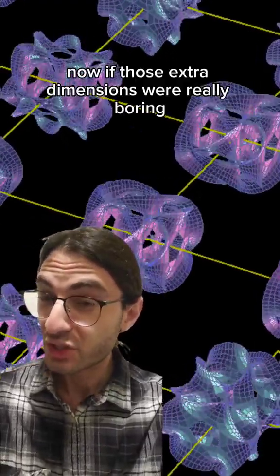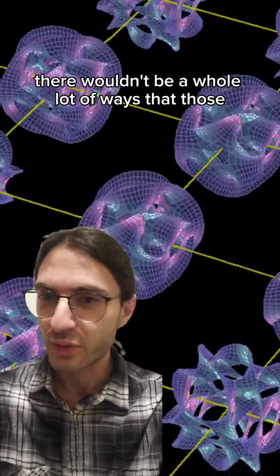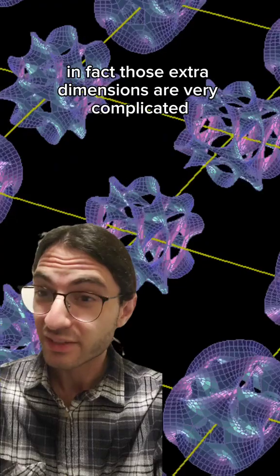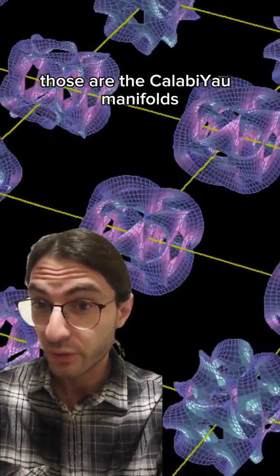Now, if those extra dimensions were really boring, like our large three dimensions are, there wouldn't be a whole lot of ways that those strings could wrap around them. But there's good theoretical reason to suspect that in fact, those extra dimensions are very complicated. Those are the Calabi-Yau manifolds.